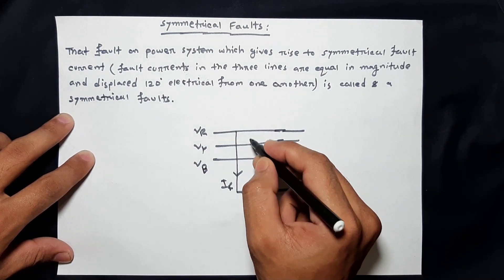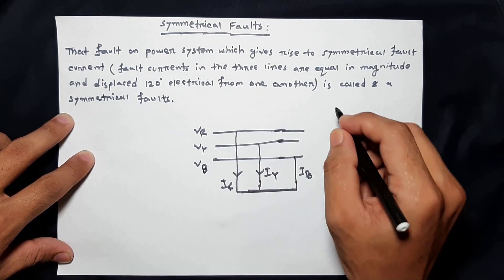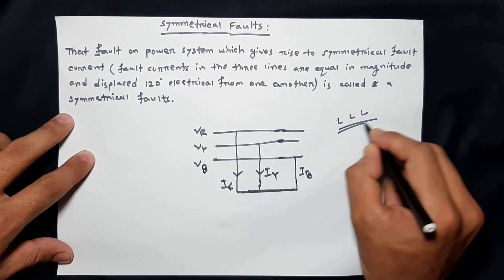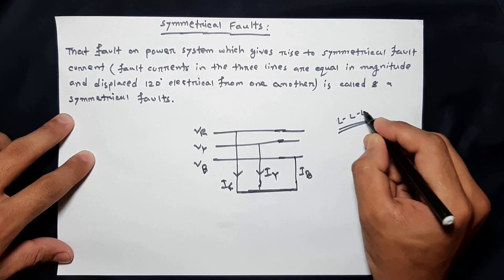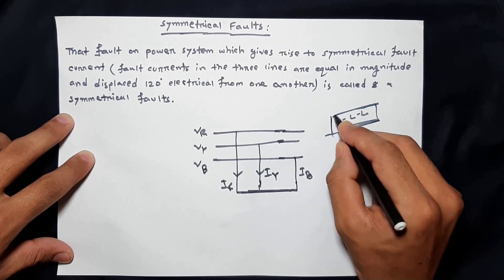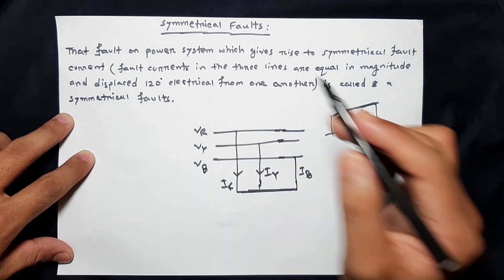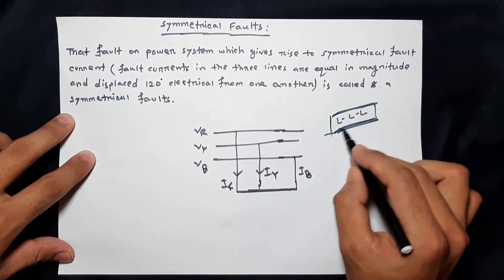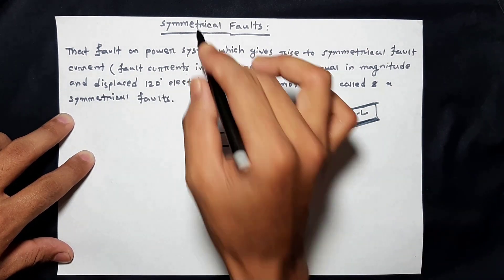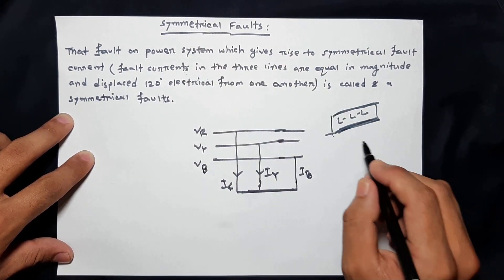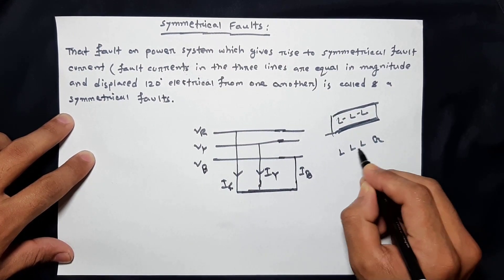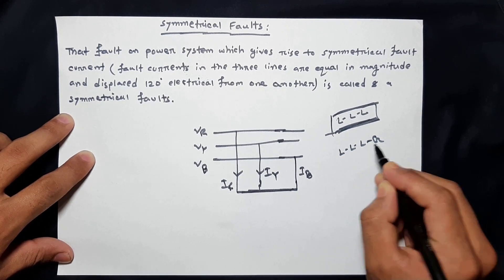The types of symmetrical fault are: first, the LLL fault (triple-L fault) — when three lines are short-circuited together, that is called a symmetrical fault. The second type is the LLLG fault (triple-L-G fault), where the three lines — red, yellow, and blue — are shorted together and also shorted to ground.